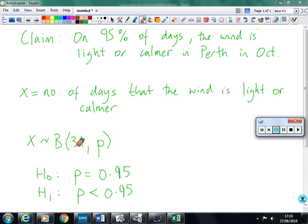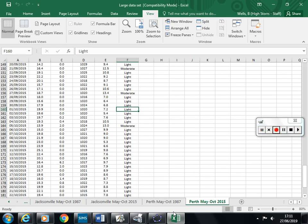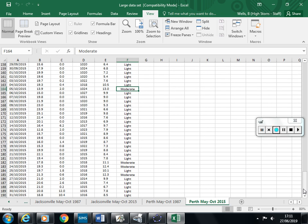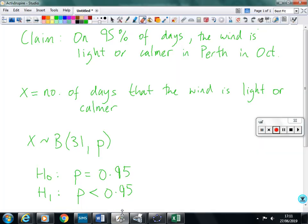So if we go to the large data set, and here's the data here. So 1st of October 2015, the wind speed was light. And if we go down and count the number of days, it's light or calmer than light. Actually, light is the calmest it gets in October. It turns out that it's pretty much always light apart from four days when it's not light, when it's moderate. So that's four days from 31. So that means 27 of the days the wind speed is light.